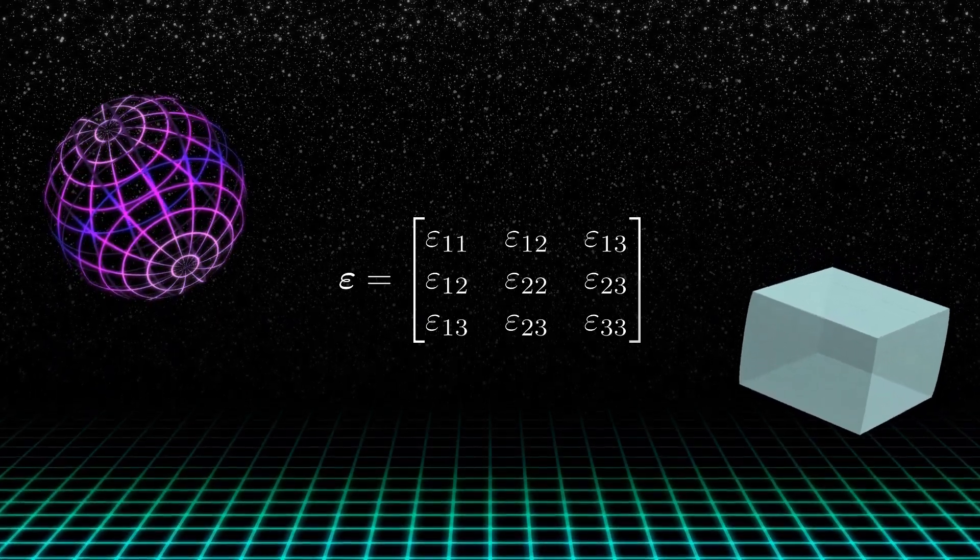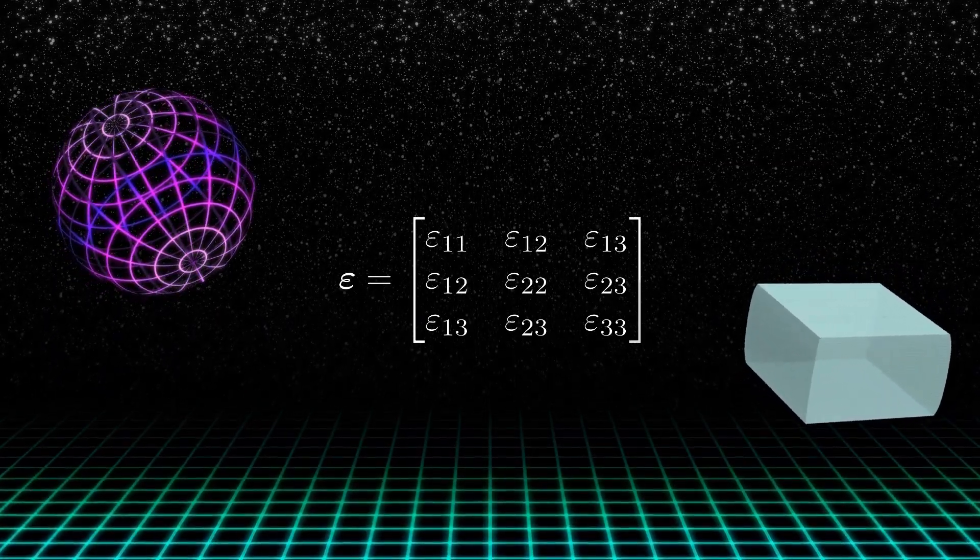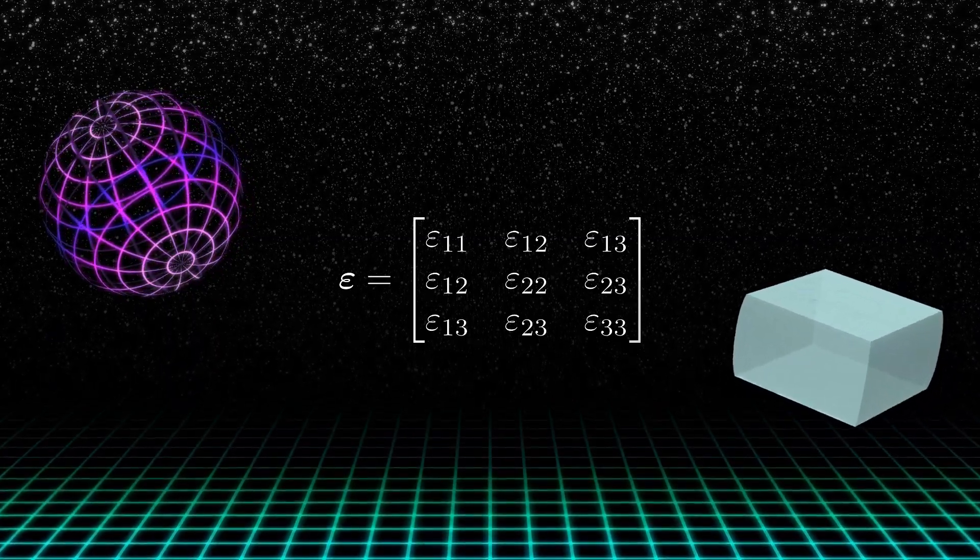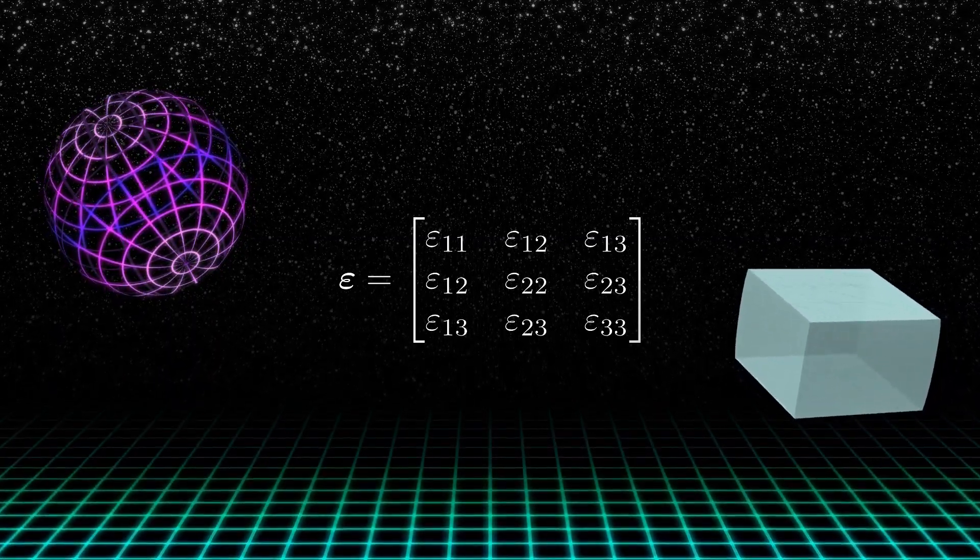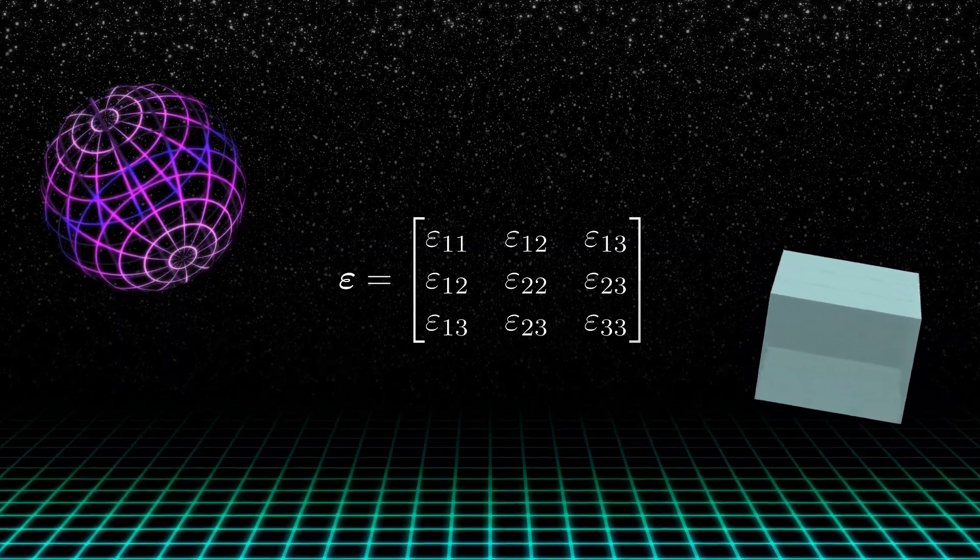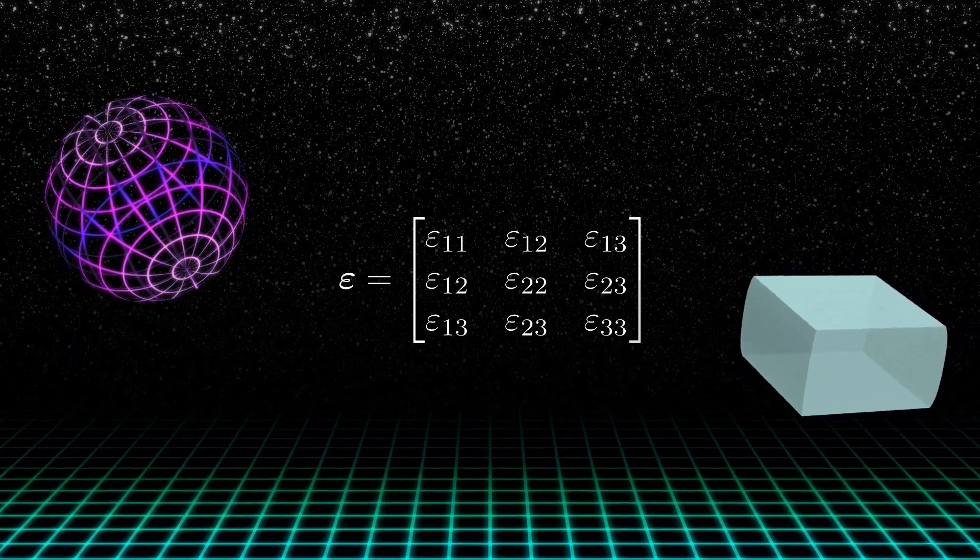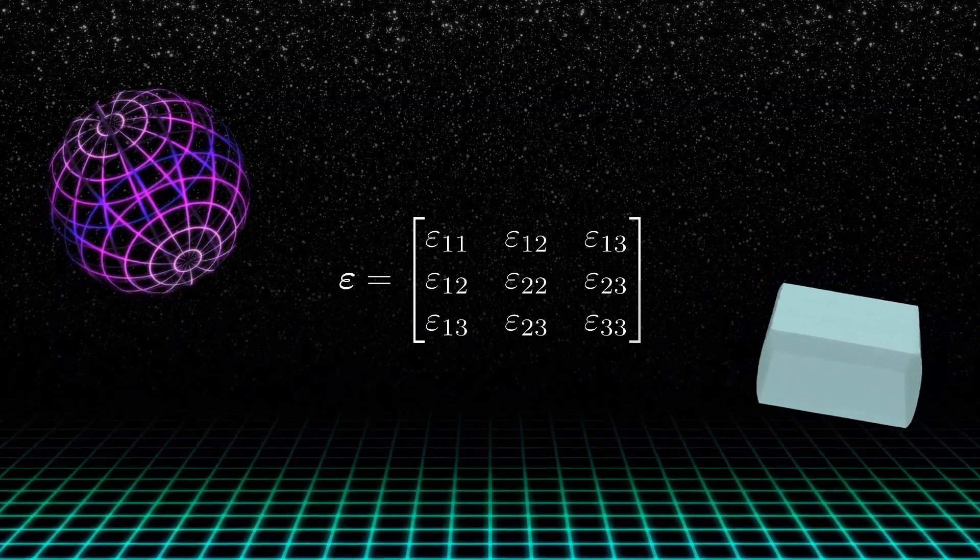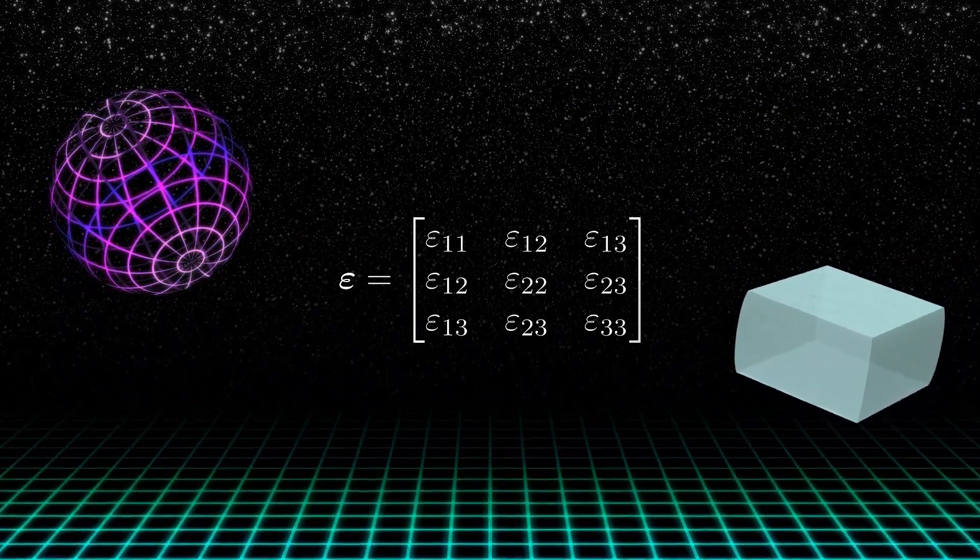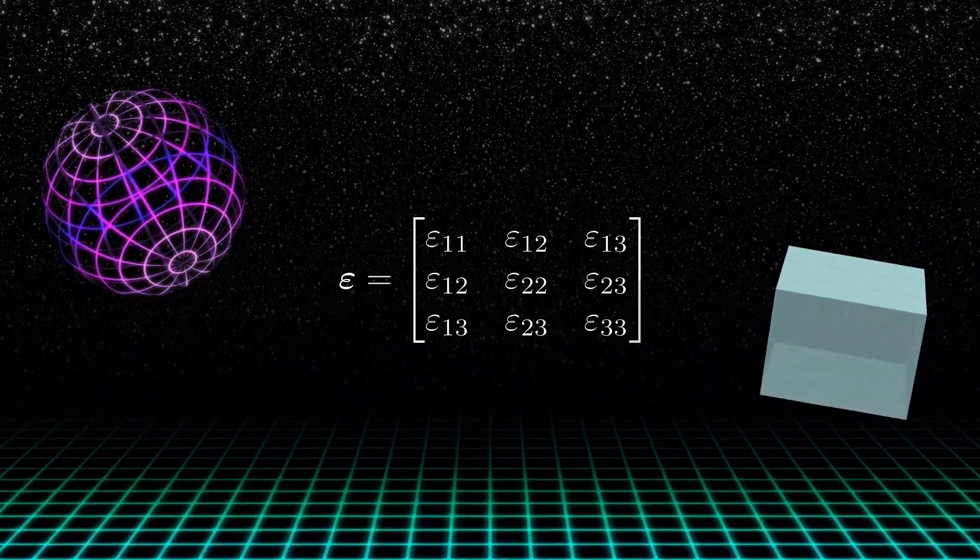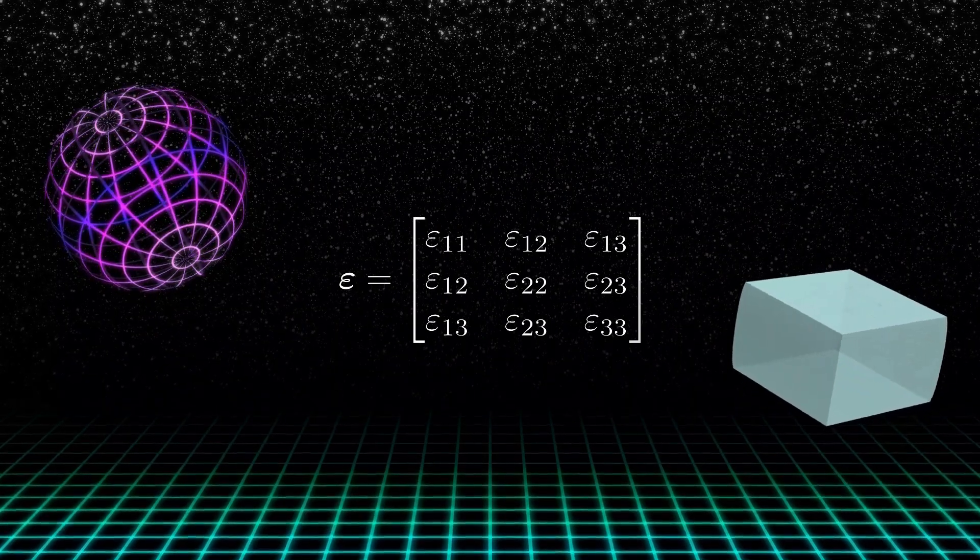This strain tensor is therefore called the small strain tensor or infinitesimal strain tensor. All displacements and strains shown in this video have been amplified for illustration purposes. But note that the small strain tensor should only be used for strains that do not exceed 1 or maximum 2 percent.